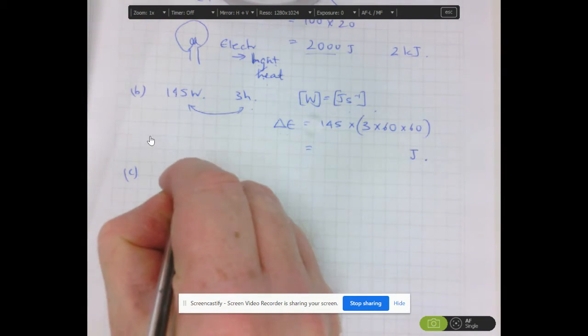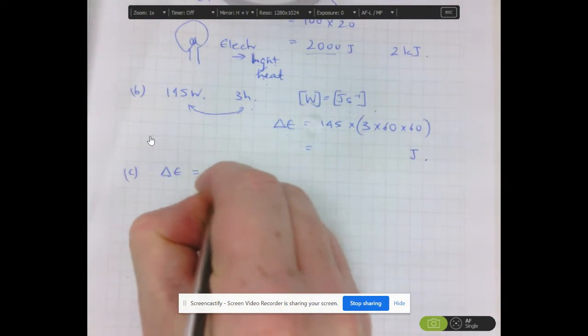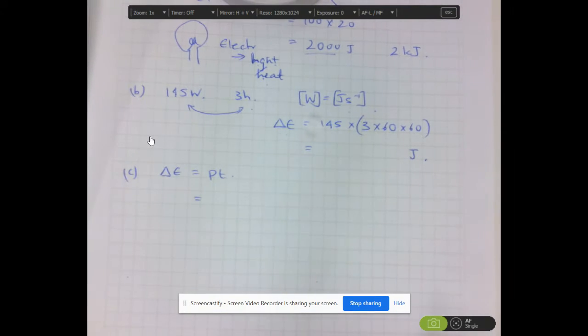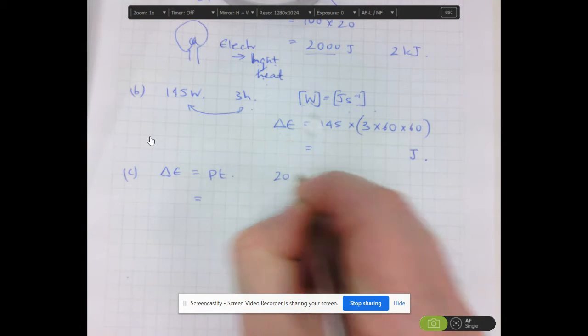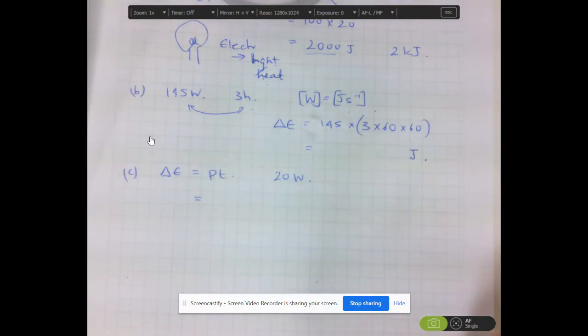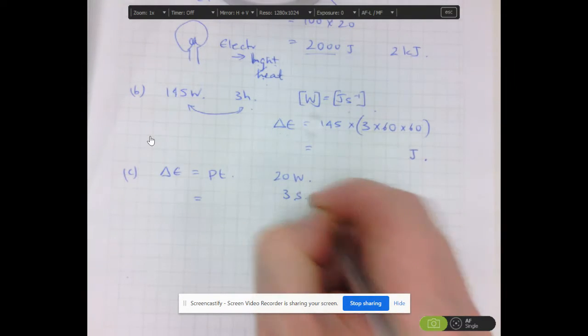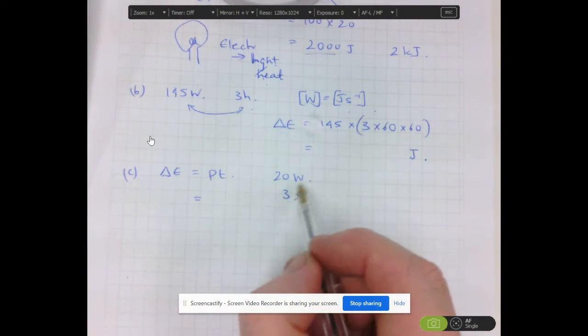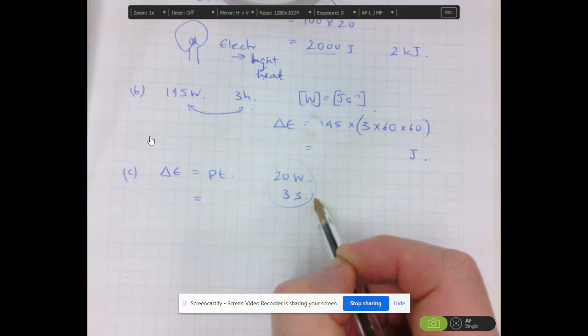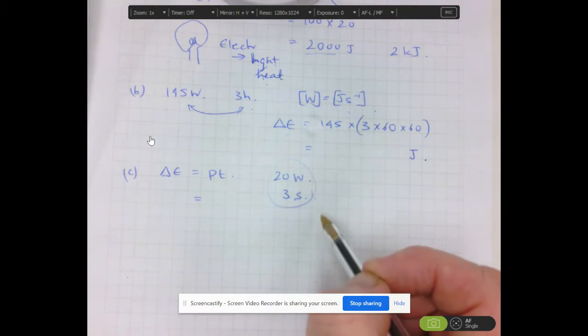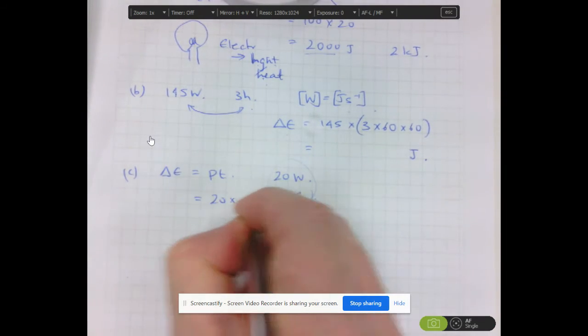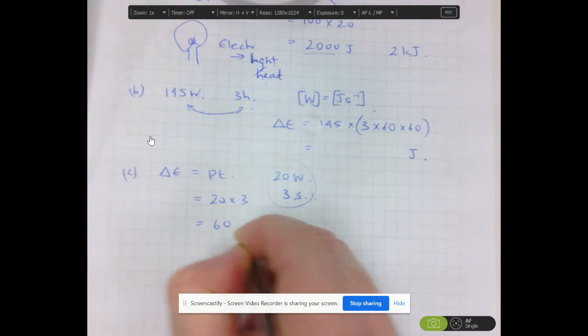Let's go through that. So energy, delta E, is equal to Pt. So if there was perfect ideal transformation, this would have the power rating of the toy is 20 watts and it's in operation for three seconds. So let's work out if all of this power is transferred into kinetic energy, what would it be done? So that would be 20 times 3, which is 60 joules.